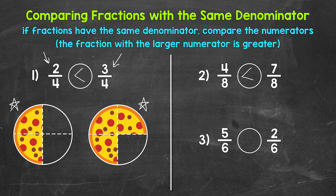Lastly, let's move on to number 3, where we have 5 sixths and 2 sixths. So reading from left to right: 5 sixths is greater than, less than, or equal to 2 sixths. If we have the same size total here divided into 6 equal pieces, which is greater? 5 out of the 6 total pieces, or 2 out of the 6 total pieces? We have the same denominator, so we can just compare the numerators. 5 is greater than 2, so 5 sixths is greater. Our symbol opens up towards 5 sixths, and we can read this from left to right as 5 sixths is greater than 2 sixths.